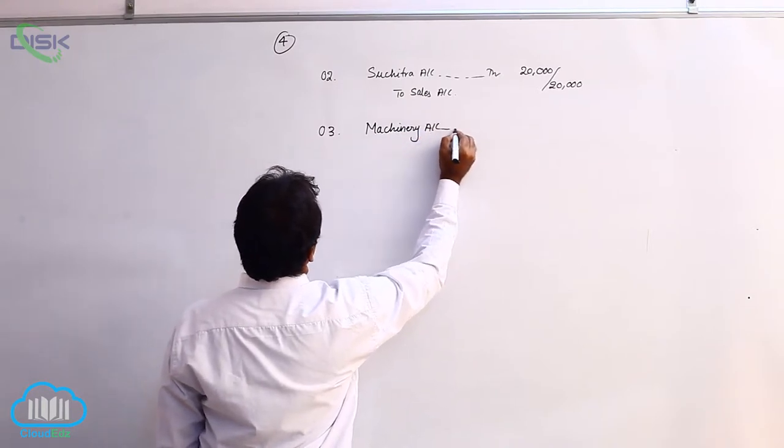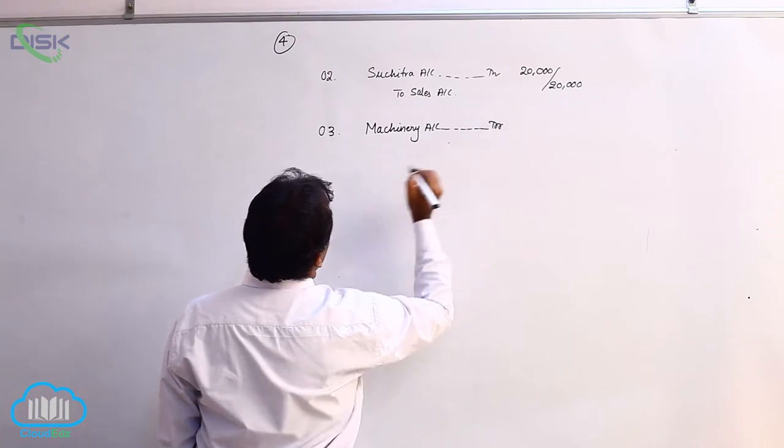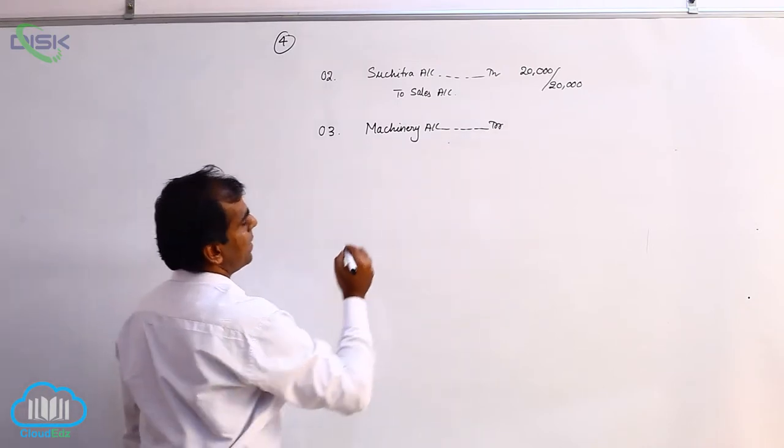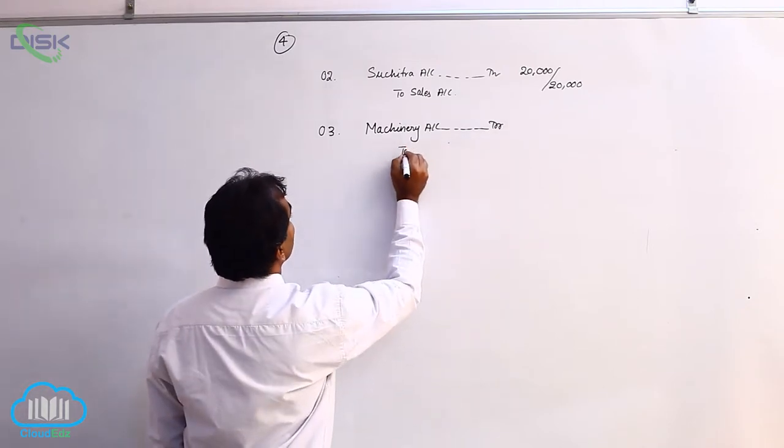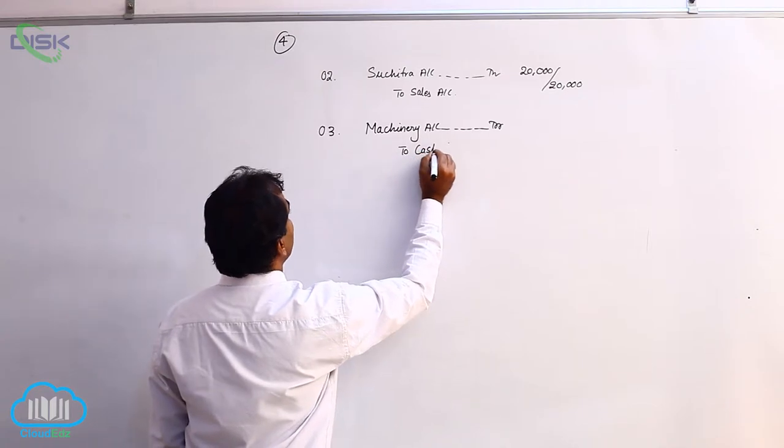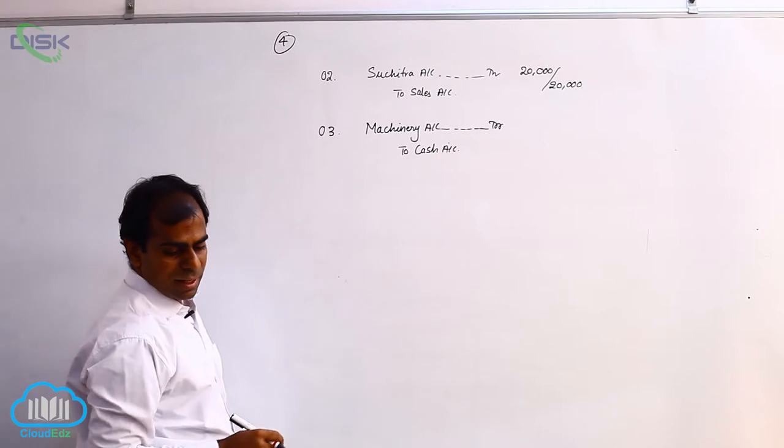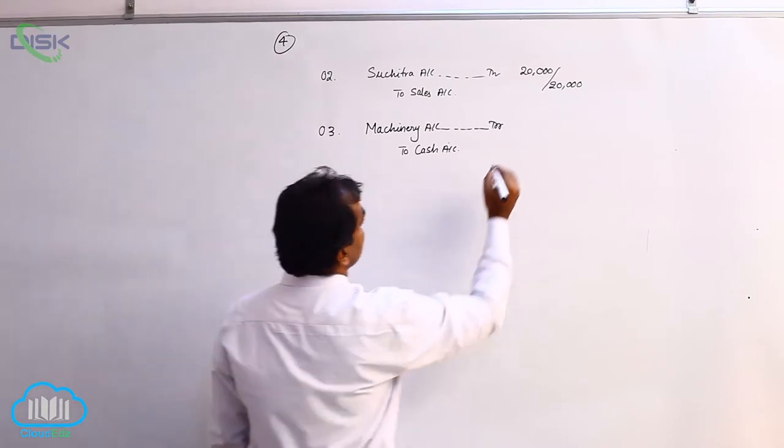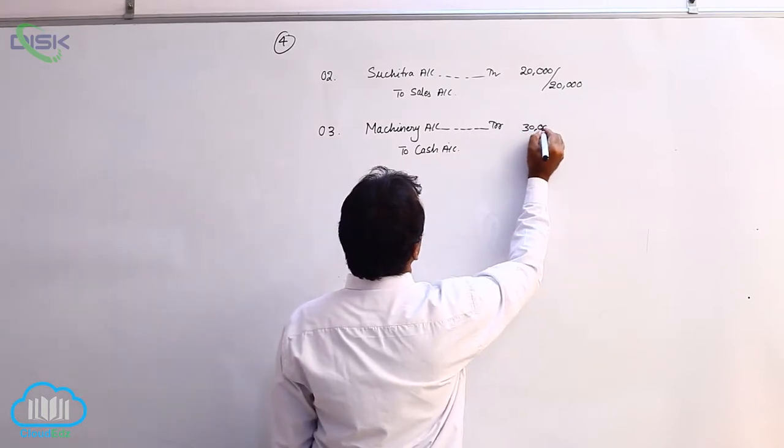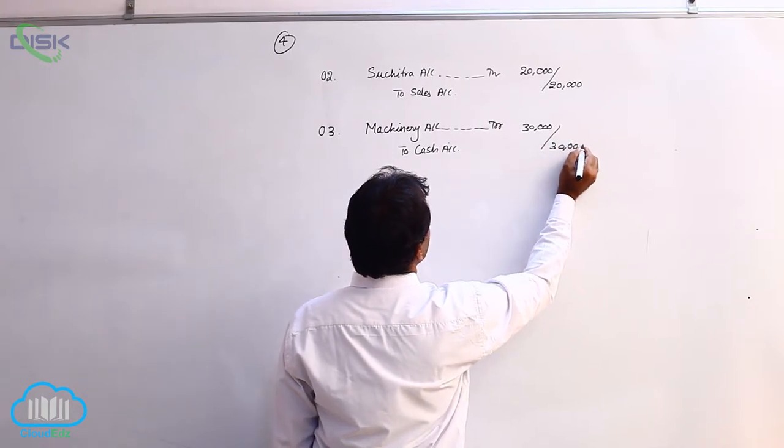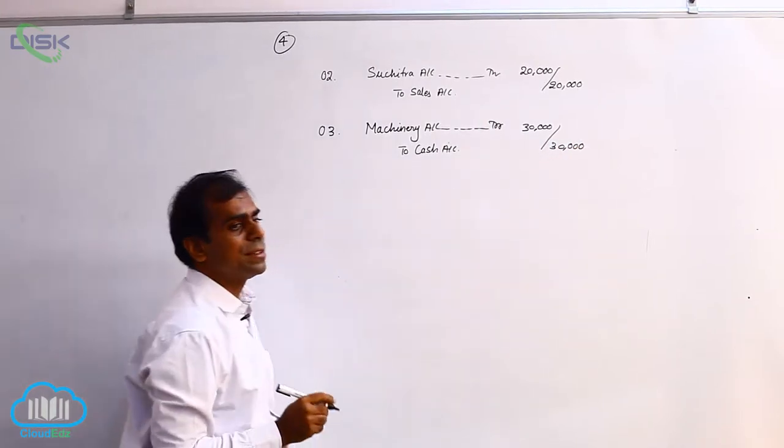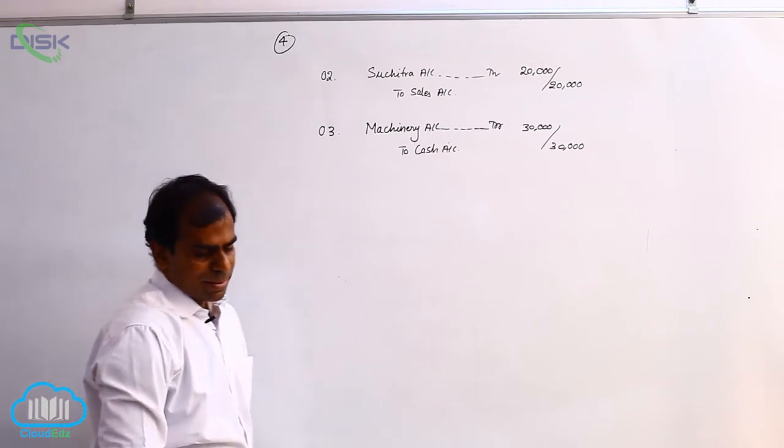So, we will be buying this machinery naturally for cash. Cash is real account and when we are buying, it goes out. So, we will credit cash because cash is going out based on the principle of real account. The amount being 30,000, being machinery purchased.